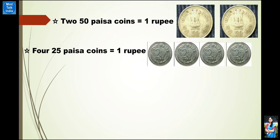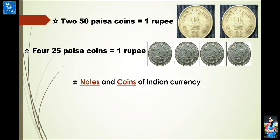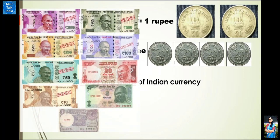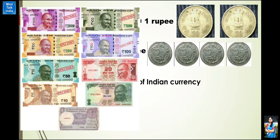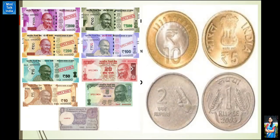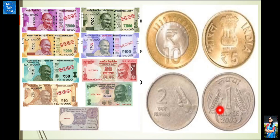Now let us see which notes and coins we use in Indian currency nowadays. अभी हमारे पास one rupee, five rupee, ten rupee, twenty rupee, fifty rupee, hundred rupee, two hundred rupees, five hundred, और two thousand rupees के notes होते हैं। उसी तरह coins में one rupee coin, two rupee coin, five rupee coin, and ten rupee coin हम market में use करते हैं।